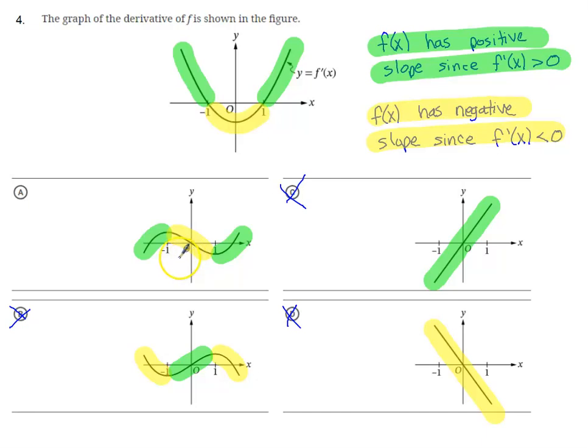So obviously we're down to option A, but check out highlighting in green to the left of negative 1, highlighting in yellow between negative 1 and 1, and then highlighting in green from 1 to infinity. And again, that's all due to the sign of the derivative being positive. We need positive slopes on f of x. The sign of the derivative being negative, we need negative slopes on f of x. We are definitely looking at option A.